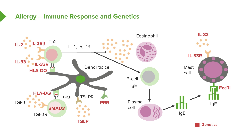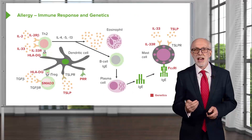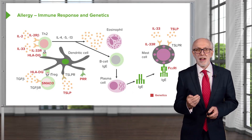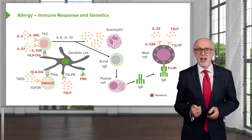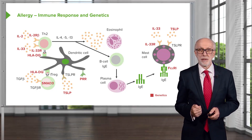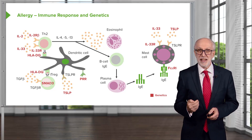Mast cells, just like Th2 cells, have a receptor for interleukin-33, and therefore that polymorphism is acting at several different levels during the allergic response. And TSLP is influential in modulating the activity of mast cells, just as it can act on dendritic cells.